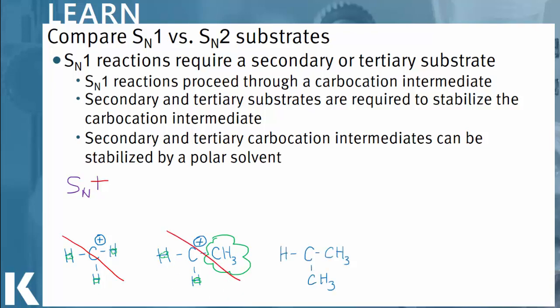We've added one more carbon to our substrate and now this is a secondary carbon. It is secondary because there are two carbons and one hydrogen, with our positive charge on the carbon in the middle. There is more electron density around these carbons, so a secondary carbon is definitely able to support carbocation formation.